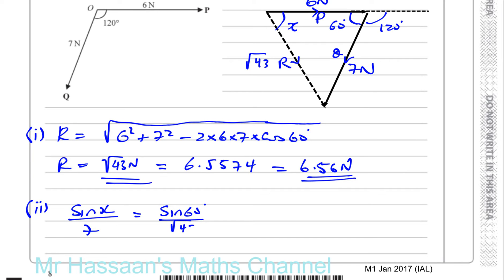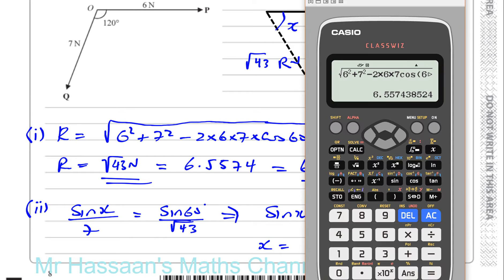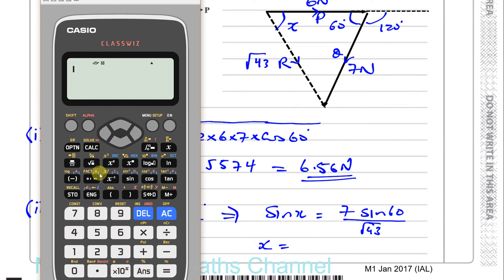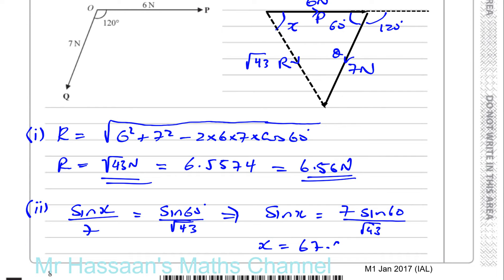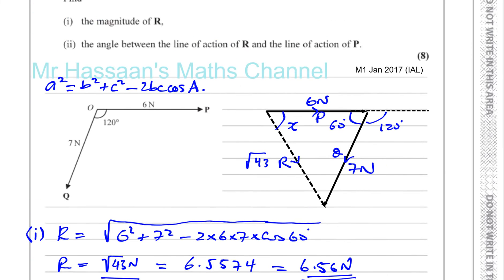It's best to use the exact form root 43 in calculations. So sine X equals 7 times sine 60 divided by the square root of 43. Taking the inverse sine of that gives 67.589 degrees, which we round to one decimal place: X equals 67.6 degrees. The question doesn't specify the nearest degree or 3SF for angles, so one decimal place is appropriate.